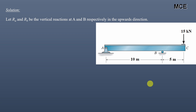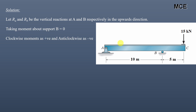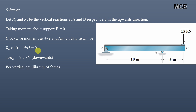Now we will determine the vertical reactions to draw the moment diagram. Assuming Ra and Rb are vertical reactions at A and B respectively, taking moments about B equals zero with clockwise positive: Ra × 10 + 15 × 5 = 0, giving Ra = −7.5 kN, meaning Ra acts downward. For vertical equilibrium, Rb = 15 + Ra = 22.5 kN acting upward.